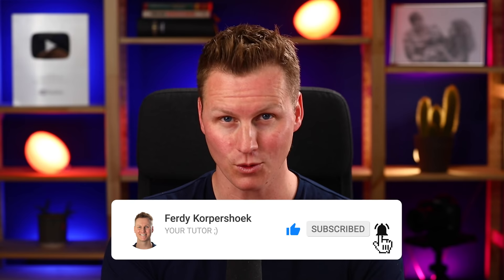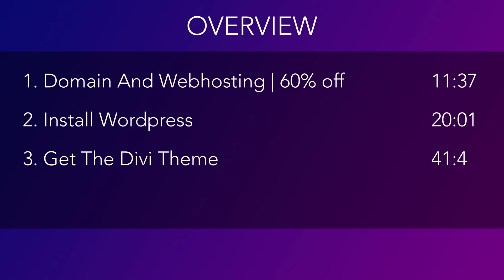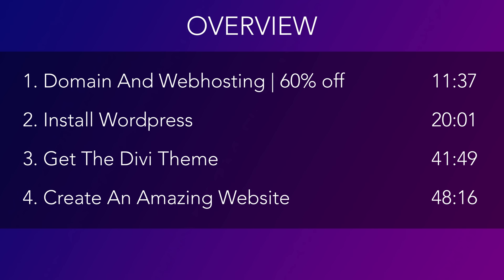Now let's talk about the four steps we will take to create an amazing website. I will show you how to get a domain name and web hosting, and I can give you 60% discount. Then we will install WordPress. After that we will get the Divi theme, and then we will create an amazing website. If you already have a WordPress website up and running, you can skip step one and two and go directly to the timestamp.